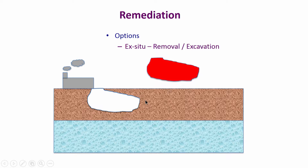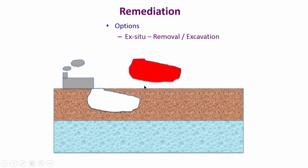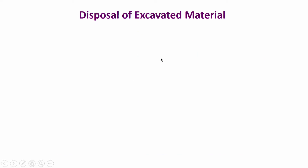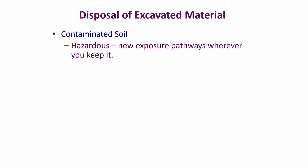We take it out by excavation and then there will be a gap that will be filled up with clean material or a filler. Once we remove it we have various options to work with. What do we do with the excavated material? We have transferred the contamination from the original area to this mass of soil, and there are different options for disposal of the excavated material. We have to think about it critically because this is now a new waste material.